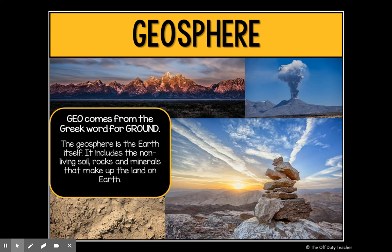Next, we have the geosphere. Geo comes from the Greek word for the ground — if you take a geology class, you'll learn about rocks and minerals. Anytime you see that geo root word, it's related to the Earth or the ground. The geosphere is the Earth itself — it includes non-living soil particles, rocks and minerals, dust in the desert, and dust blown into the air by winds. Anything that's Earth, soil, rocks, minerals, sand, or dust is part of the geosphere, regardless of where those rocks or minerals find themselves.